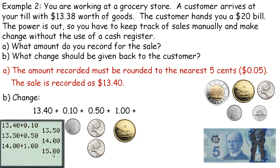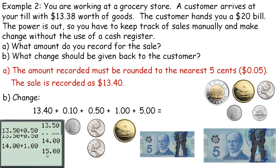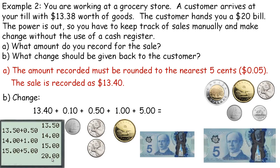At $15.00, add a five dollar bill to get to $20.00. So the change given back is a five dollar bill, a loonie, two quarters, and a dime. That amount of change plus the $13.40 charge adds up to the $20.00 the customer gave you. That's how you count change — you take what the person is being charged and add coins and bills to get up to the total amount tendered.